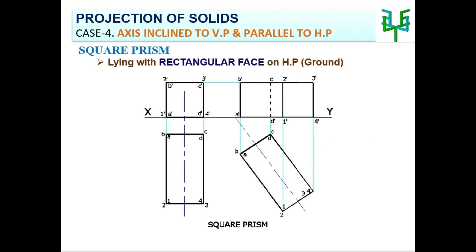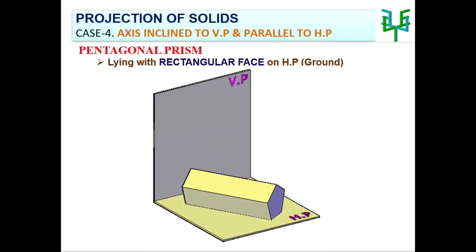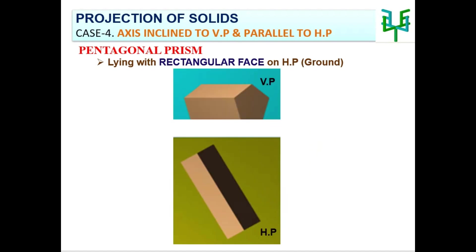Here are a few different prisms with the same condition — resting on the ground with its rectangular face and with the axis inclined to VP.